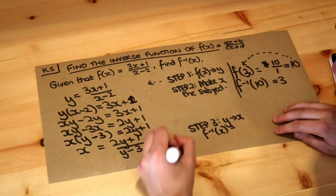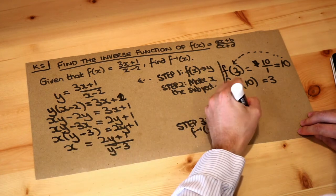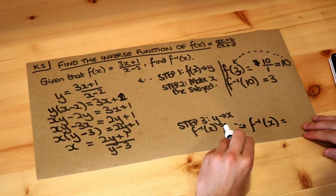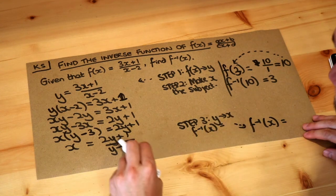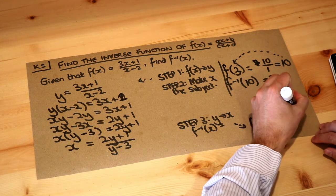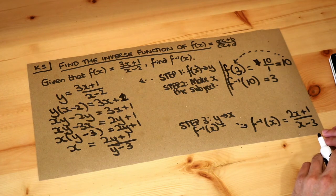So that means our final answer—I've run out of space down here so I'm going to write it down here. I'm just going to write f minus 1 of x is equal to—our inverse function is—and as per the instructions I'm going to replace the y's with x. So 2x plus 1 over x minus 3. And that's the final answer, that is the inverse expression.